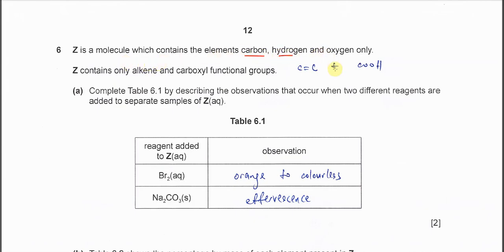Z only has alkene and carboxyl functional groups. Alkene means C=C double bond, carboxyl means COOH.